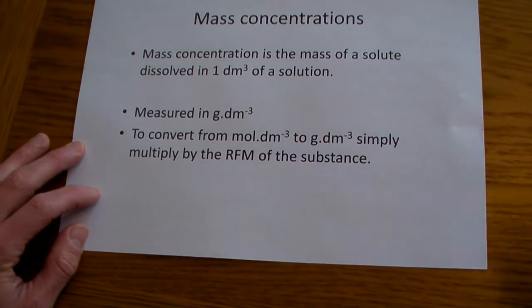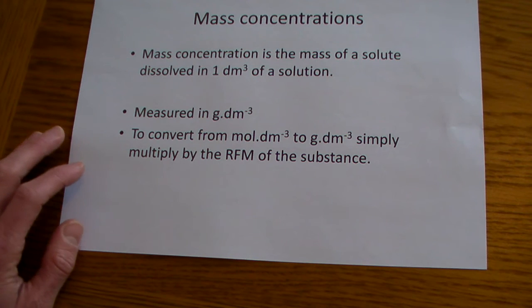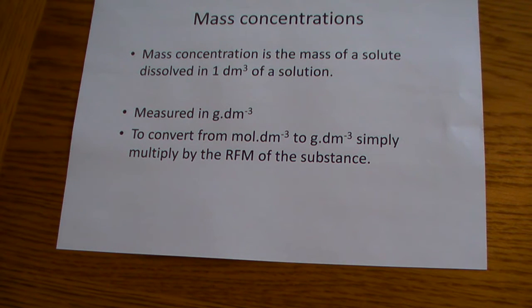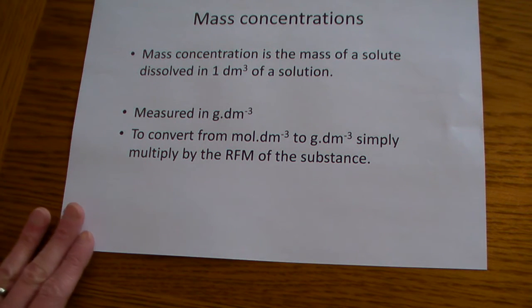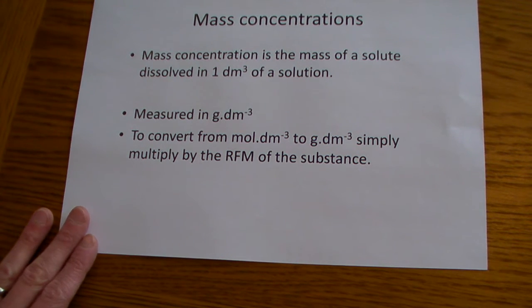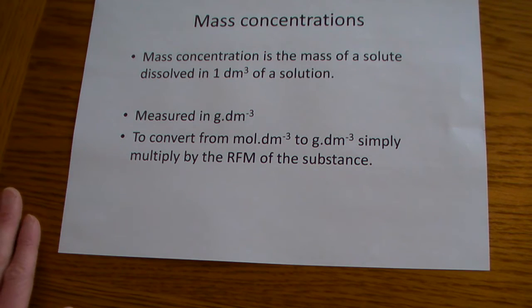So to convert between the two — to go from moles per decimetre cubed to grams per decimetre cubed — you simply need to multiply by the RFM of the substance.